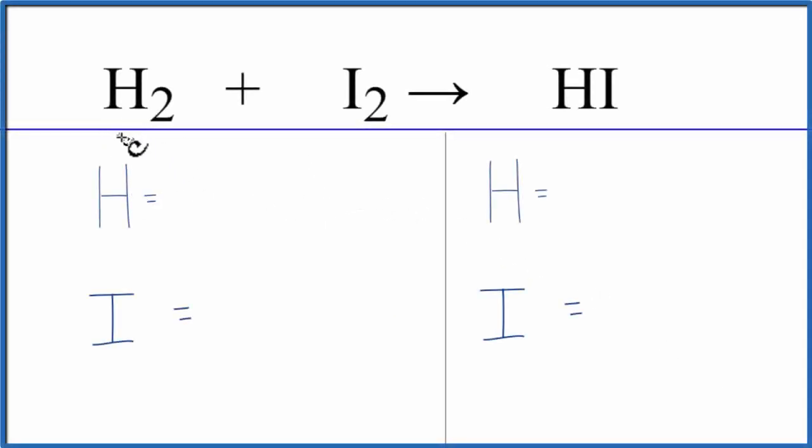In this video, we'll balance the equation H2 plus I2 gives us HI. This is hydroiodic acid.